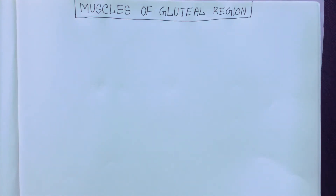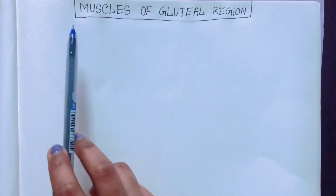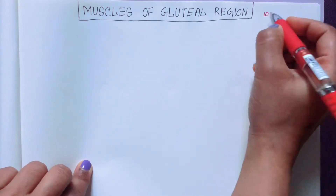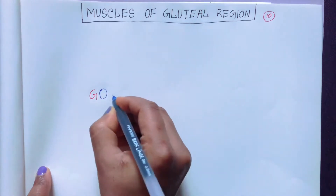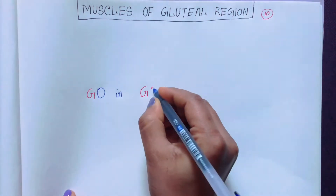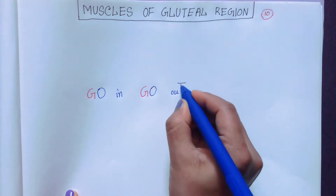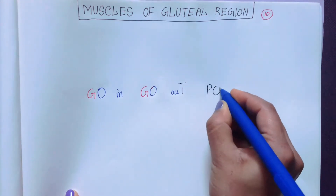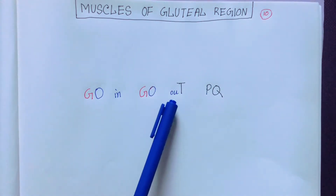Hello everyone, Assalamu Alaikum, welcome to my channel. Today I will talk about the muscles of the gluteal region. We know we have 10 muscles in the gluteal region, and we can remember their names with a mnemonic: GO IN GO OUT P Q.